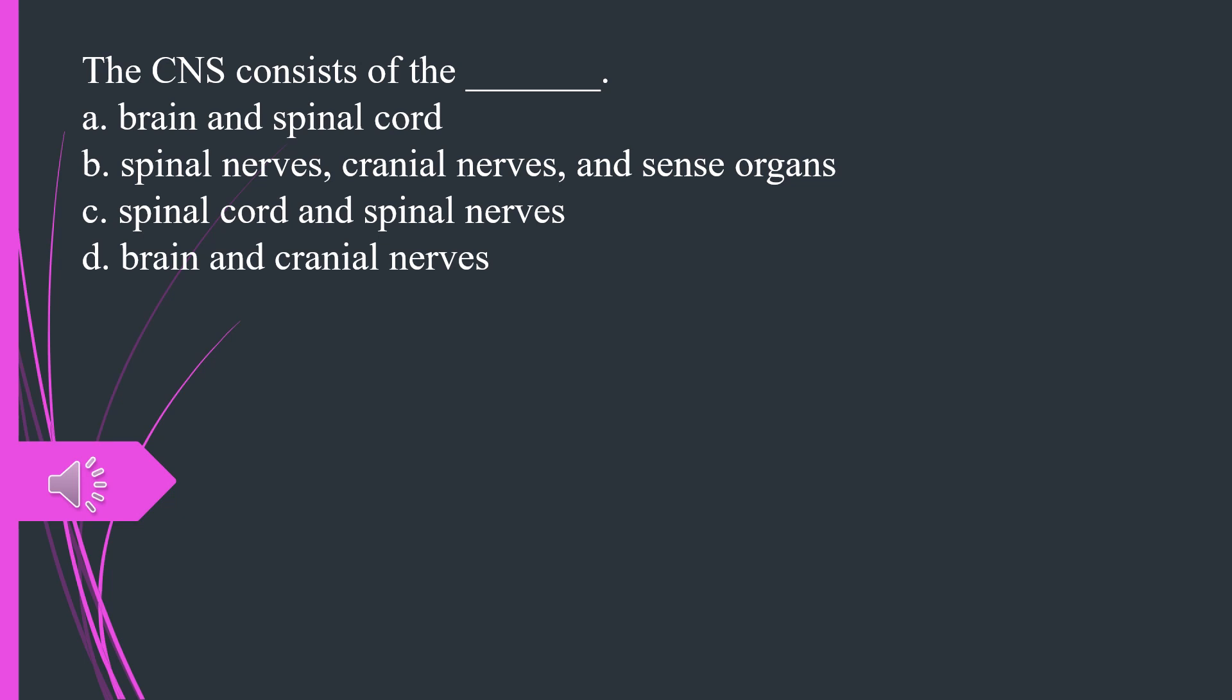The CNS consists of the A. Brain and spinal cord B. Spinal nerves, cranial nerves, and sense organs C. Spinal cord and spinal nerves D. Brain and cranial nerves. The answer is A, brain and spinal cord.